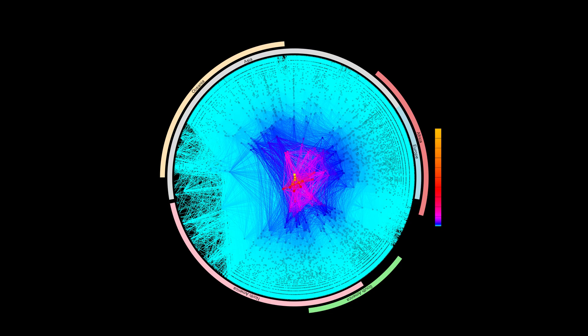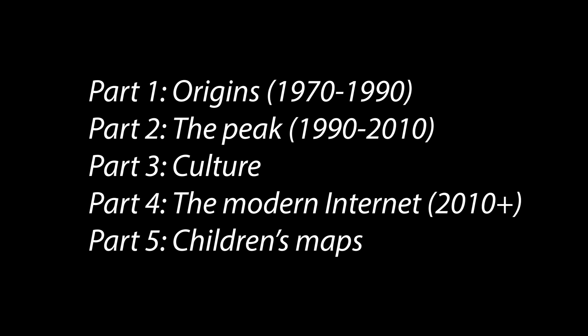There's no definitive map of the internet. Every map keeps some things in, leaves some stuff out, and all are influenced by the progression of the internet as a technological, economic, and cultural force. We will trace through the history of internet maps with plenty of examples to understand the evolution of different approaches and views. By the end, even if you don't have a favorite map, you'll at least have some options.